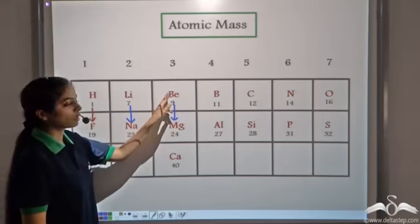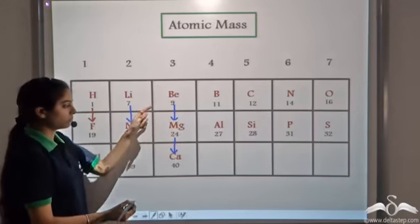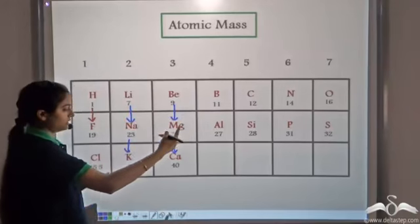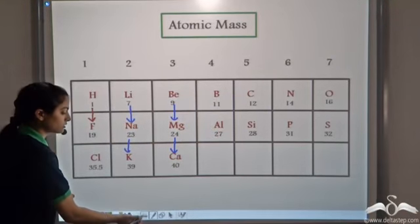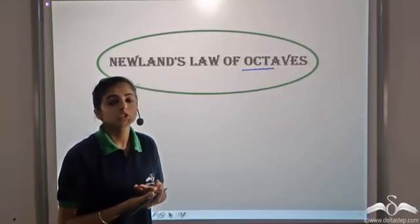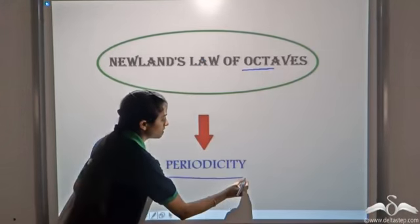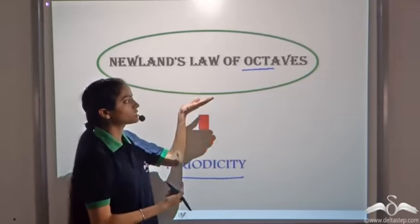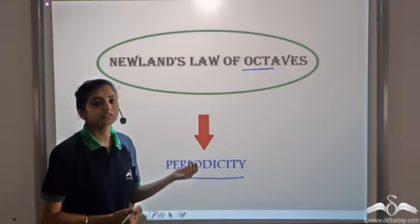So every eighth element starting from a given element shows the same properties. For example, beryllium, magnesium, calcium all show the same properties; lithium, sodium, potassium show the same properties. So after the seventh element, every eighth element shows the same properties. Based on this observation, Newlands gave his law of octaves — octa means eight — so every eighth element shows the same properties as the starting element. This was the first time that periodicity — meaning repetition of properties after a certain interval — was observed during the classification of elements. He was awarded the Davy Medal for his contributions.